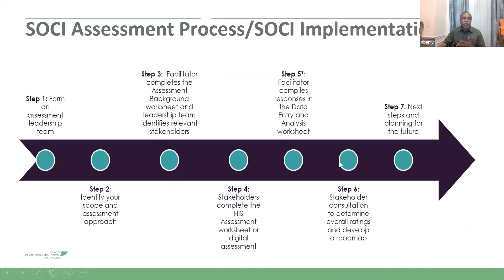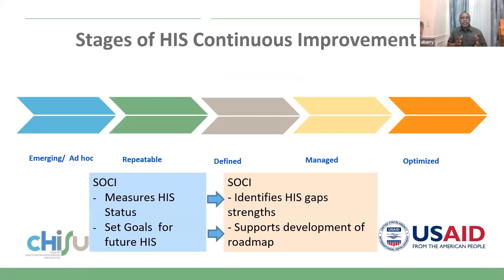The next slide summarizes the steps from setting a leadership team to planning for future improvement, going through all the steps outlined. The tool proposes five stages of continuous improvement: from emerging to optimized, going through repeatable, defined, and managed. SOCHI helps us measure HIS status at a given time, putting us in a position to set realistic goals and identify HIS gaps and strengths to plan a roadmap for improvement.